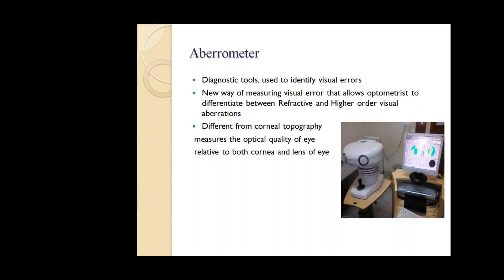To deal with the measurement of aberrations, we use a clinical instrument popularly known as an aberrometer. An aberrometer is a diagnostic tool used to identify visual error. It is a new way of measuring visual error that allows the optometrist to differentiate between refractive and high order aberrations, and to differentiate between corneal topography measurements and the optical quality of the eye relative to both cornea and lens.